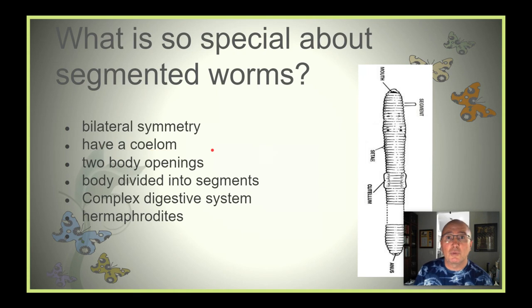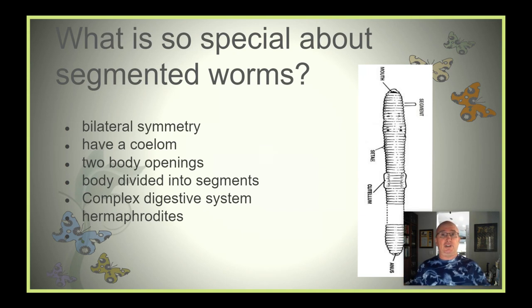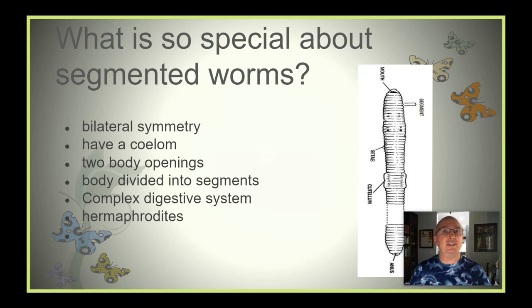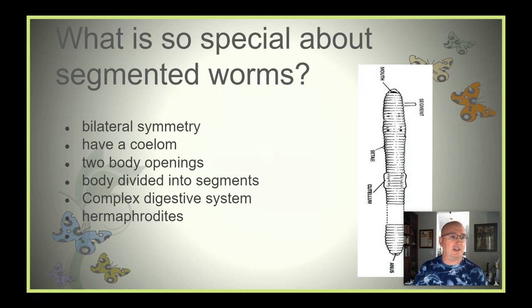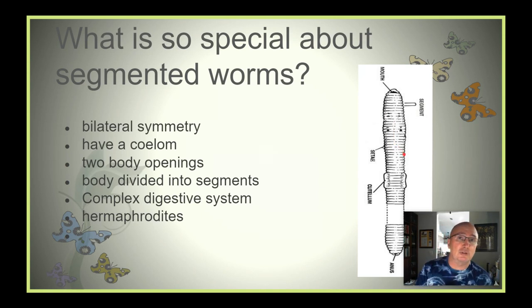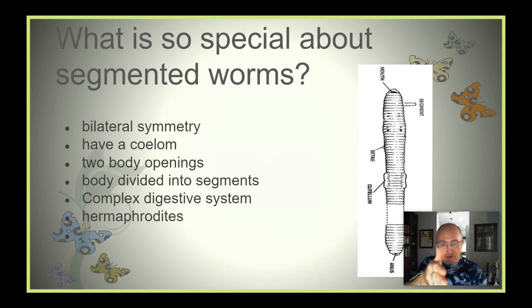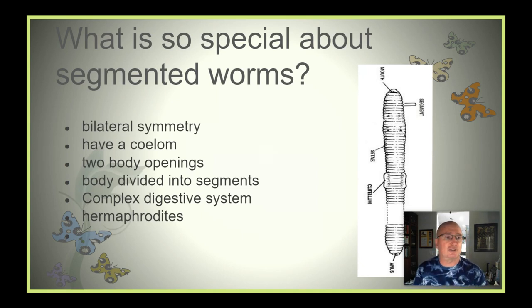They also have a coelom. This is really important — it's a hollow body cavity. If we were to slice down our bodies and peel our chest apart, we'd see all of our internal organs but the area would be hollow. There's actually empty space in there that allows the lungs to inflate, the stomach to get bigger and smaller. This group also has a body cavity. When you dissected an earthworm in middle school and sliced it down and pinned it back, you saw a hollow cavity with the intestines, the crop, the hearts, and all the other structures.